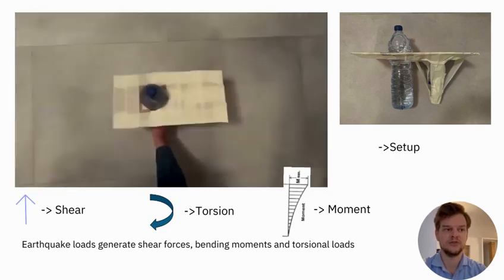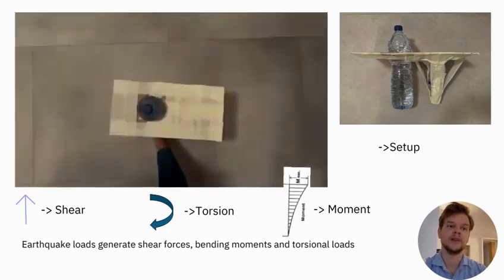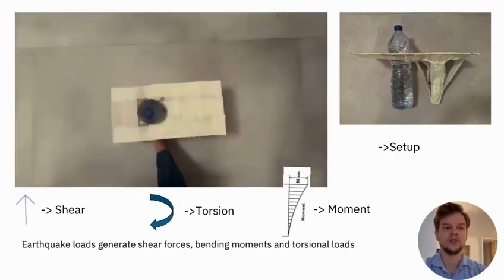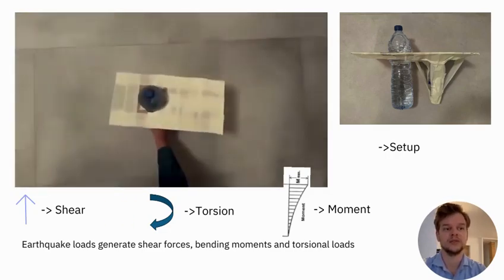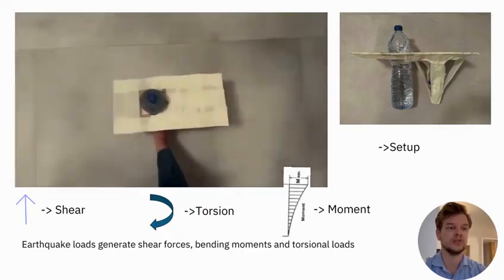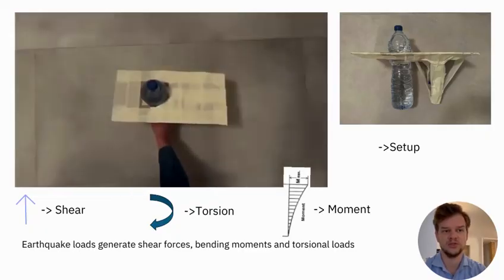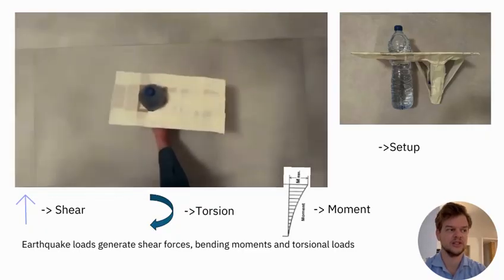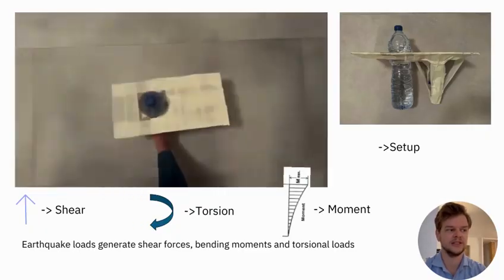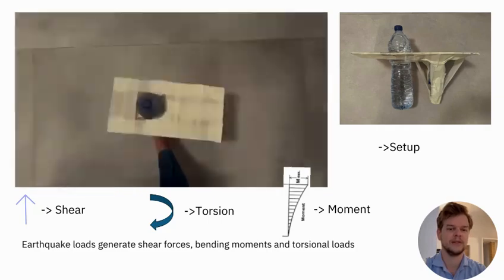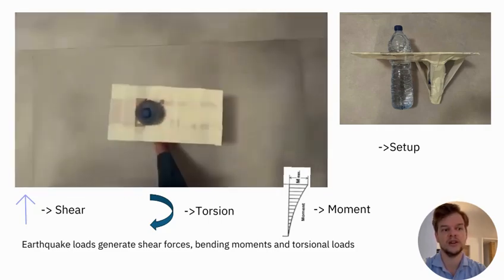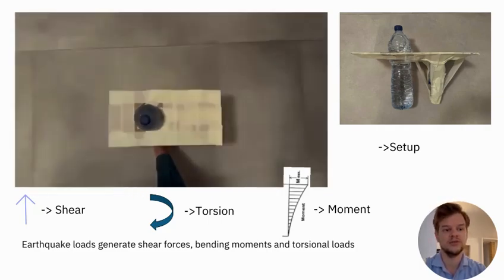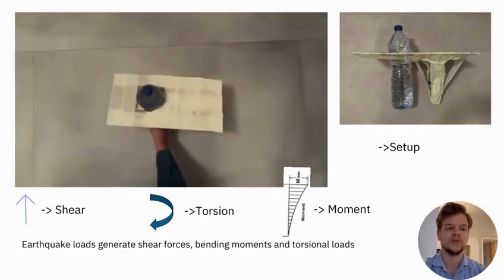This big bottle represents the concrete core, this small bottle stands for the center of mass, and the cardboard on top represents the floor slab. Watch what happens when I apply a horizontal movement — the floor starts to twist and shift. This is torsion in action: the floor isn't just sliding, it's rotating around the mass because the mass and the core are not aligned. This twisting motion transfers stress back into the core.